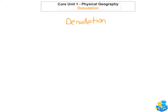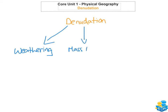So first of all, what is denudation? Well, denudation occurs by three different things: weathering, mass movement, and erosion. Those three combined make up denudation. In simple terms, denudation is just the process of breaking up and removing the rocks that have been exposed to the earth's surface.